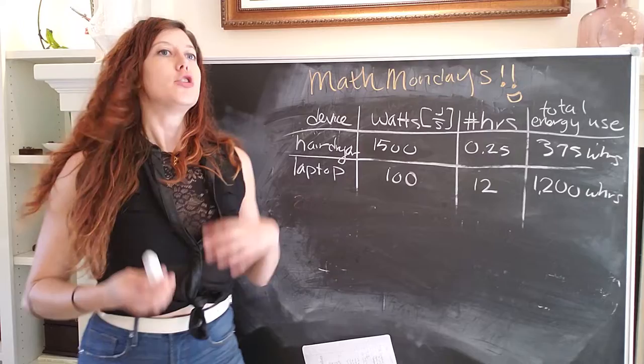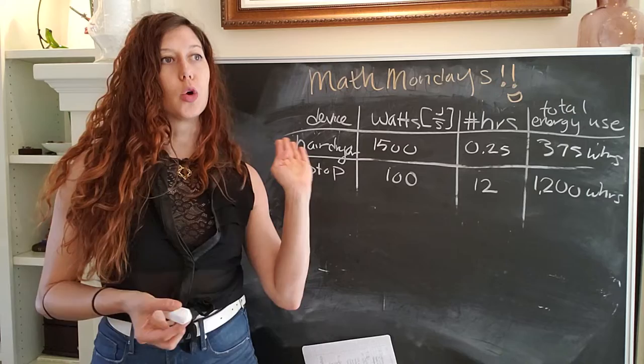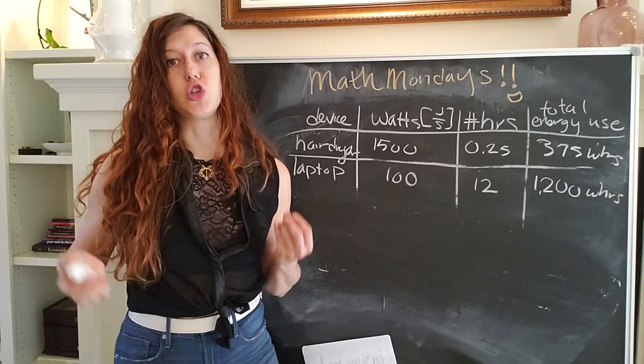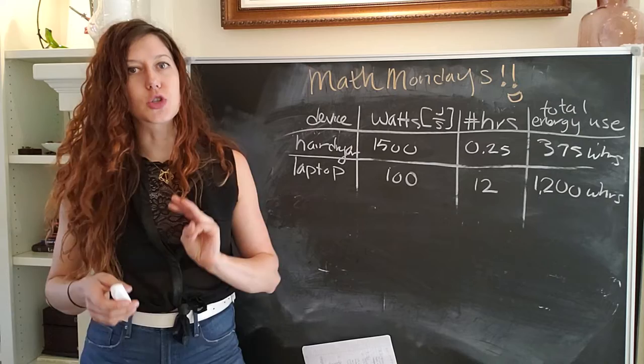To figure out how much energy your household is consuming, what you would do is you would go room by room and write down all of the devices that are using electrical energy in that room. So if you're in the kitchen, you'd say okay, the fridge, the microwave, the toaster, the coffee maker, the oven, et cetera, et cetera.